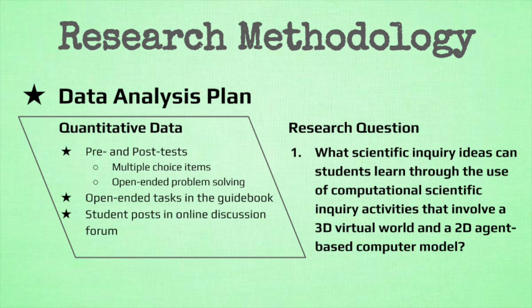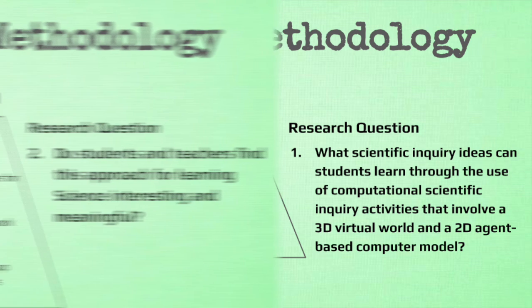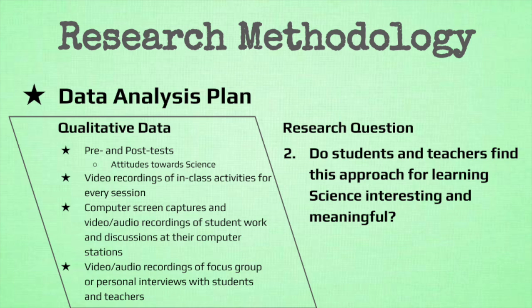Quantitative data such as student performance scores from pre- and post-tests, open-ended tests in the guidebook, and online forum posts will be analyzed and primarily used to answer the first research question on learning gains pertaining to science inquiry knowledge and skills. On the other hand, qualitative data recording participants' observable actions, body language, and feedback or comments will be analyzed to understand participants' experiences and perceptions for answering the second research question in terms of motivation and learning outcomes.